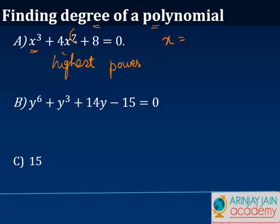The highest power of x is 7. It's 7 and 3 which we can see here, and since 7 is higher, we say that the degree of this polynomial A is equal to 7.